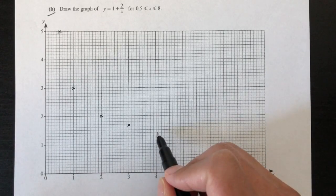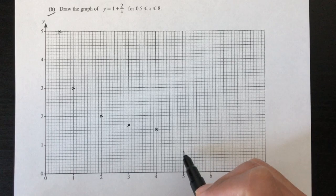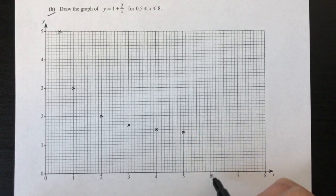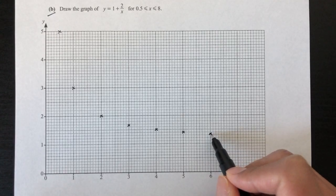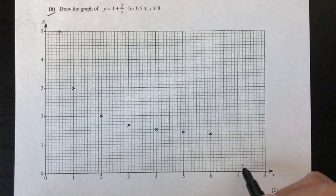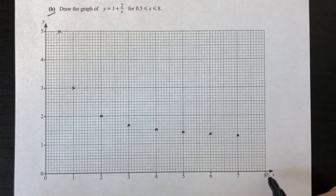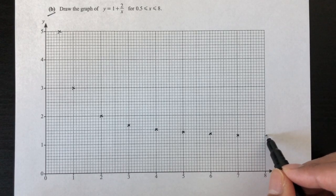Then we have (5, 1.4). Then we have (6, 1.33). So 5 is 1.4, 6 will be 1.33. And we have (7, 1.29). And finally, we have (8, 1.25). 1.25 will be right in the middle.